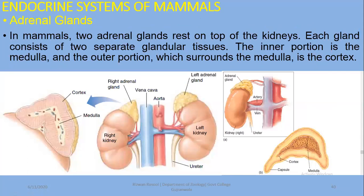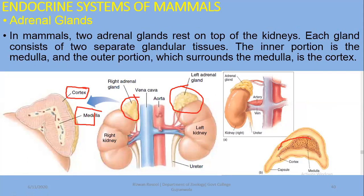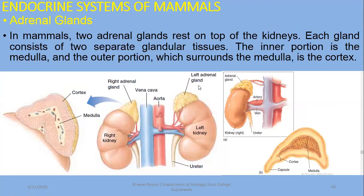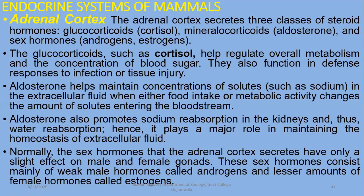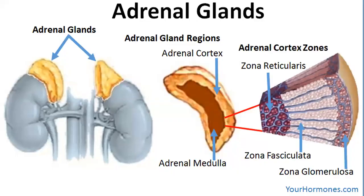Next we discuss the adrenal gland. The adrenal glands are located just above the kidneys and have two portions. The outer portion is known as the adrenal cortex, while the inner portion is termed the medulla. The cortex releases steroid hormones, while the adrenal medulla produces epinephrine and norepinephrine, which are amino acid derivatives.